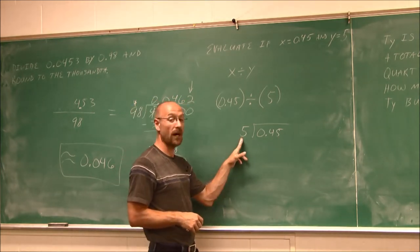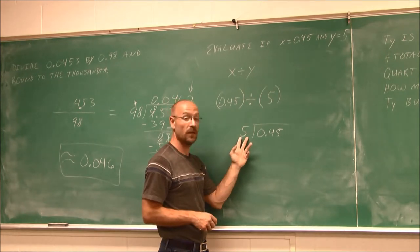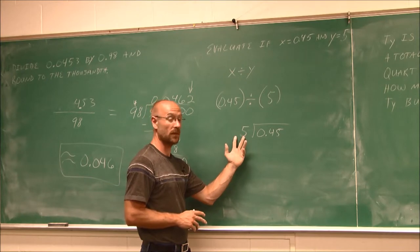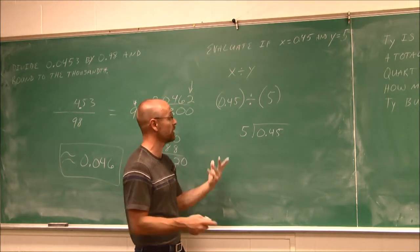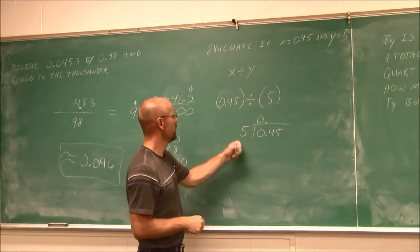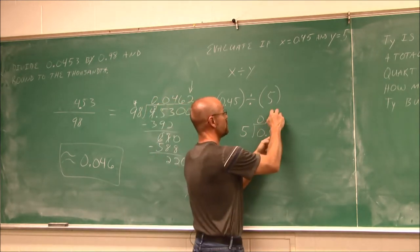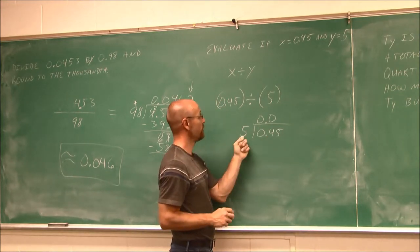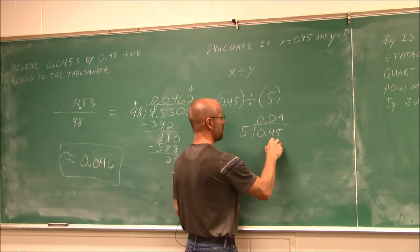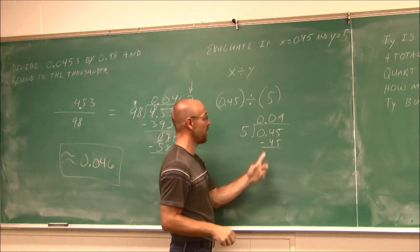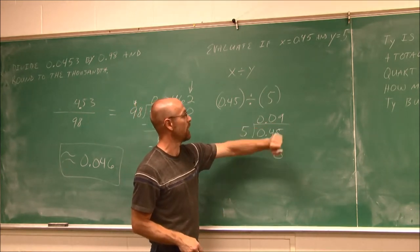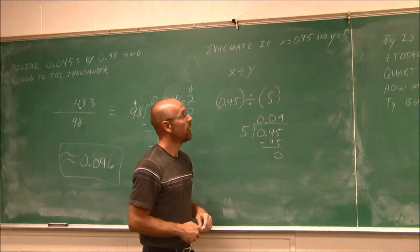Now because my divisor doesn't have a decimal, I don't have to worry about it. I don't have to move it. It's only when the divisor has a decimal do you have to move it. It is what it is at this point. So the decimal is already fixed. 5 doesn't go into 0. 5 doesn't go into 4. 5 goes into 45 nine times, and 9 times 5 would be 45. And if we find that difference, we see there's no remainder. So when we divided this, we got 0.09, or 9 one hundredths.